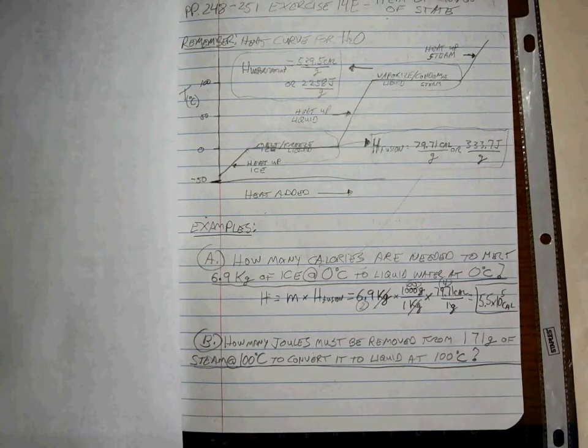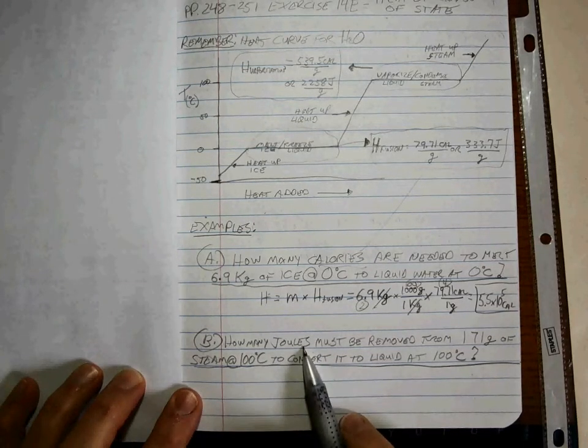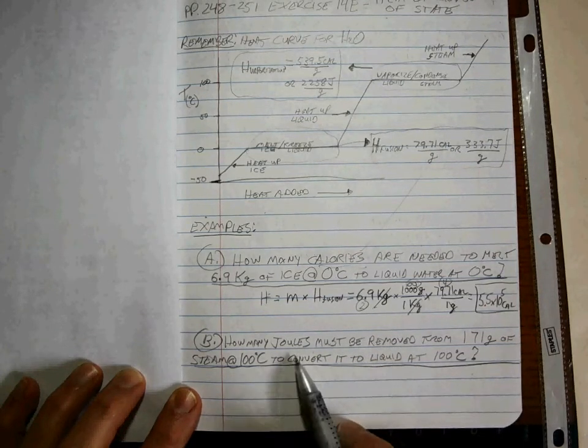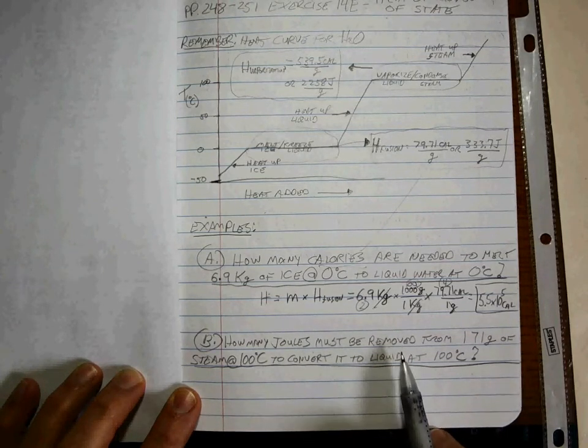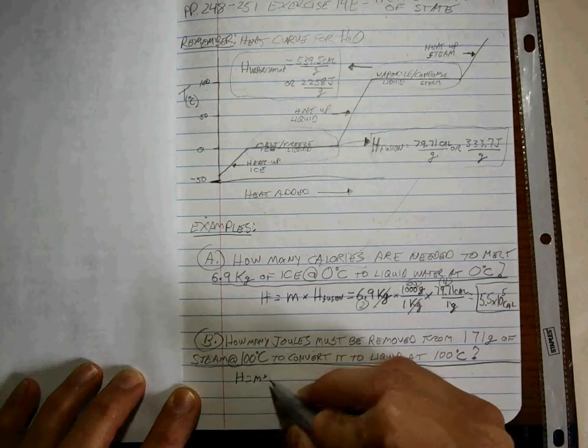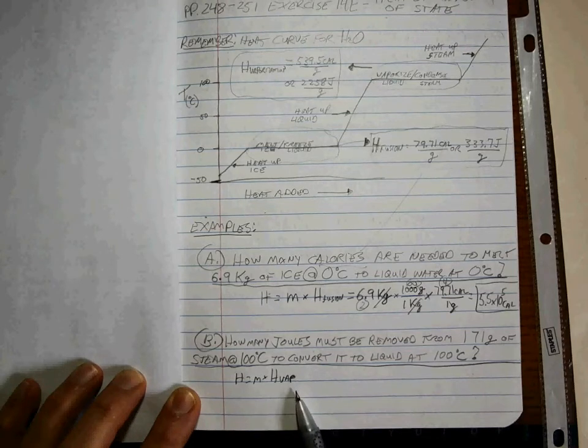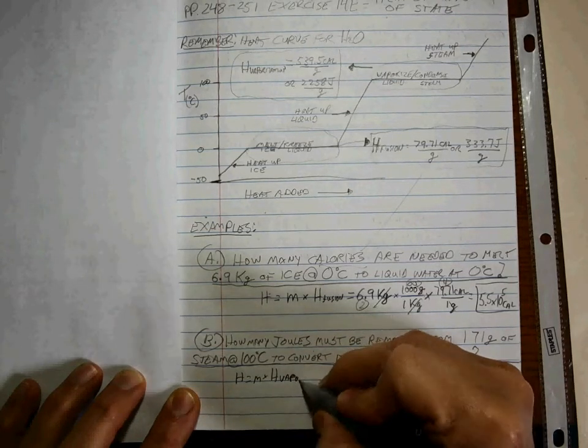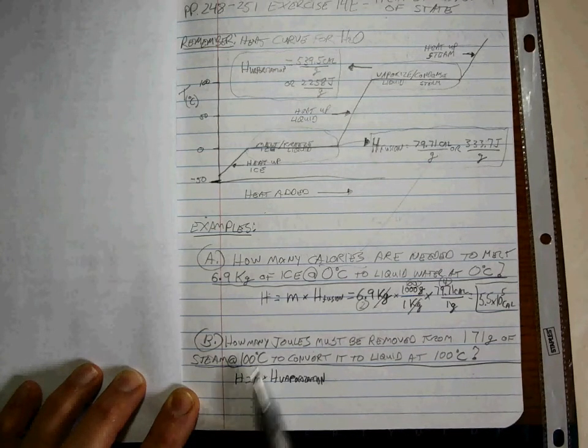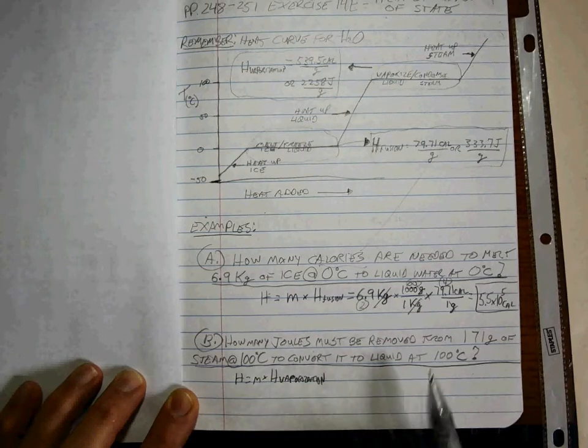Here it's the same deal. Notice that it doesn't take any extra energy if we're going one way versus the other. It's just as easy to add heat as it is to remove heat. So we do the same calculation: H is equal to m times heat, but this time we're vaporizing, we're condensing, okay? So heat of vaporization. Okay, so we're bringing the steam at 100 down to liquid at 100, but the amount of heat you have to remove is the same as the amount of heat that you would need to add to go from liquid at 100 to steam at 100.